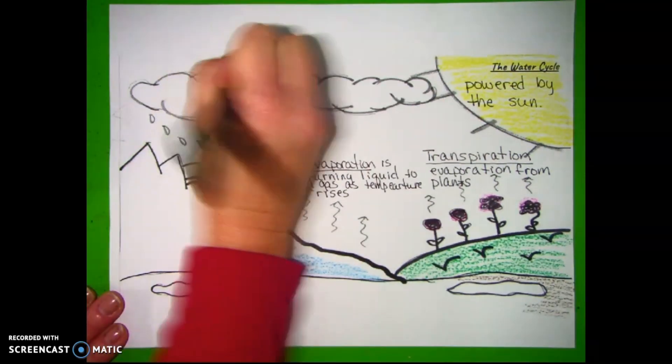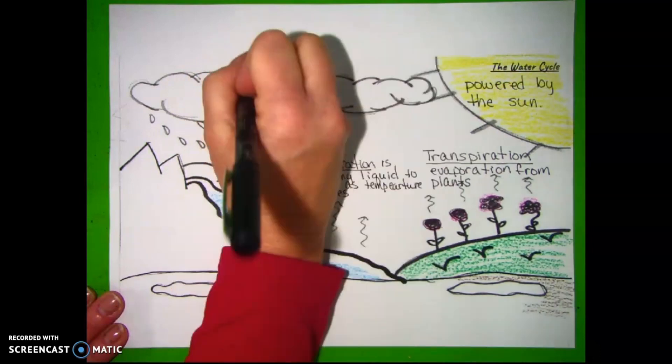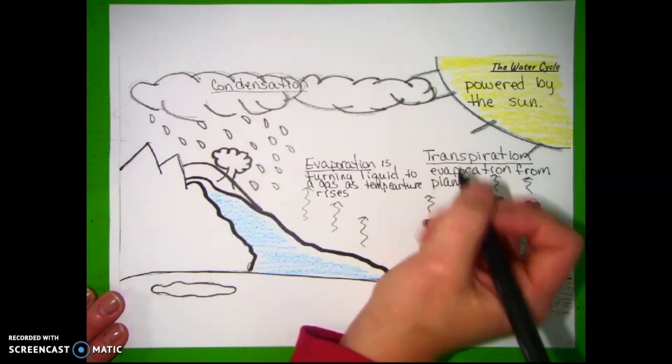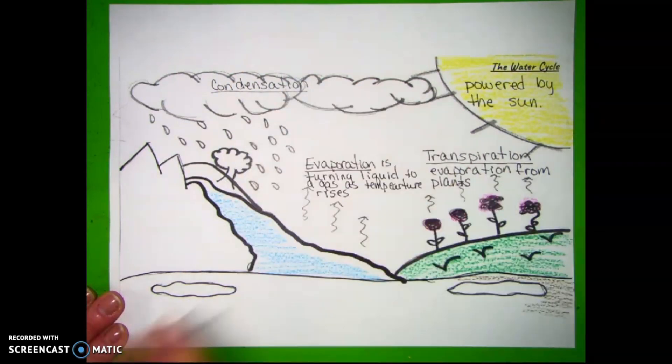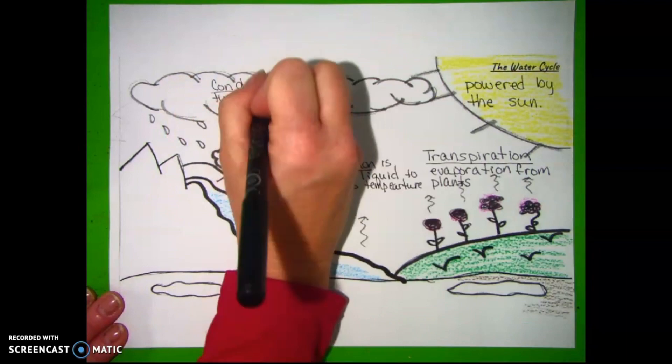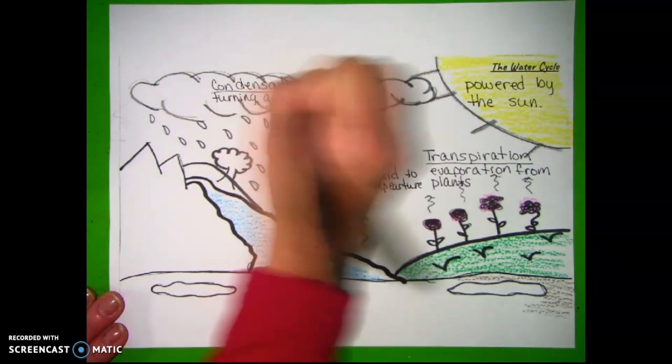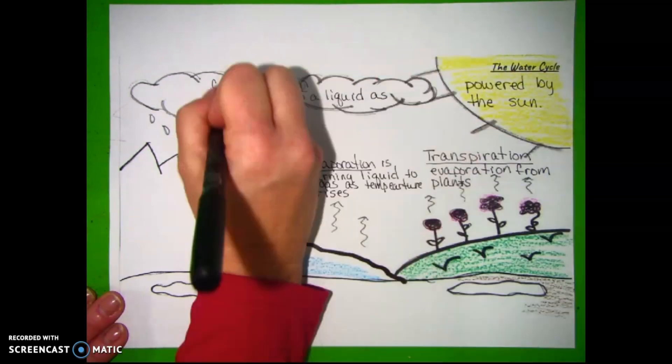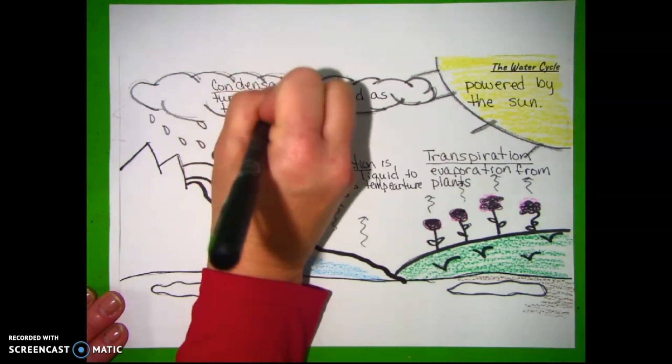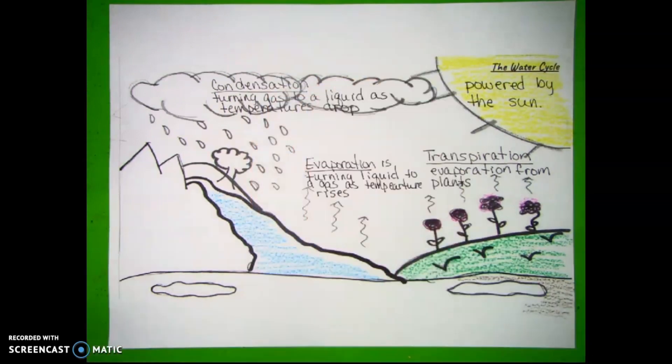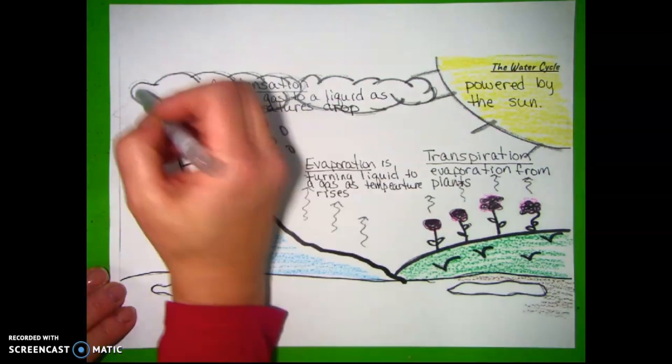The next one is, after evaporation and transpiration and it all goes up, it creates and starts gathering to make condensation. Condensation is turning gas into a liquid as temperatures drop.